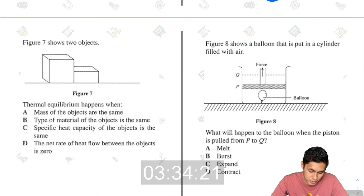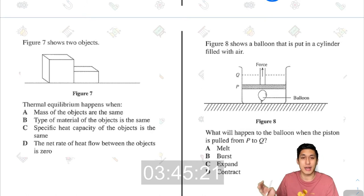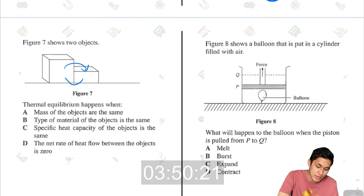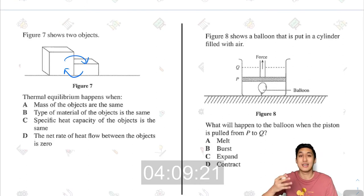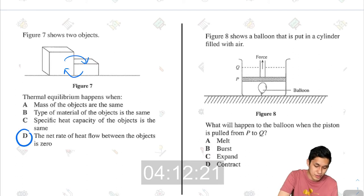Next, thermal equilibrium happens when what? Thermal equilibrium is when there is no net heat transfer. It's not that there is no heat transfer, there is always heat transfer, but there is no net heat transfer, meaning the heat going into this object and the heat coming out from this object are the same. The mass of objects are the same, that's not true, it has nothing to do with the mass, type of material, has nothing to do with that. Specific heat capacity of the objects, that is not true. The last one is correct. The net rate of heat flow between the objects is zero. That means in equals out, so this is d.